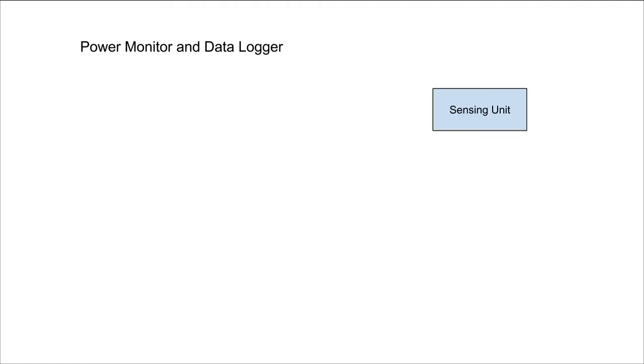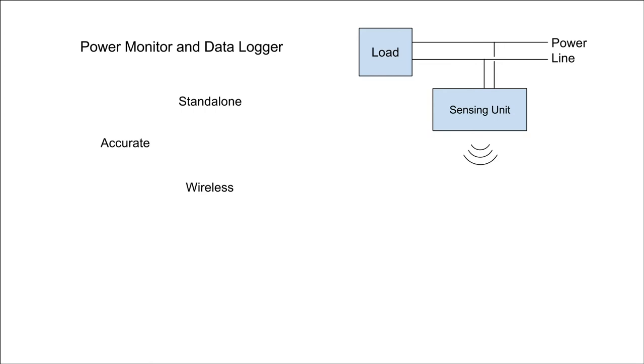A sensing unit that connects to the load supply. It measures voltage and current and calculates power data. It stands alone with no external power supply. It's also accurate to within 5%. It communicates wirelessly with a gateway that deposits the power data into a database. One gateway can handle many sensing units in parallel to acquire real-time data.